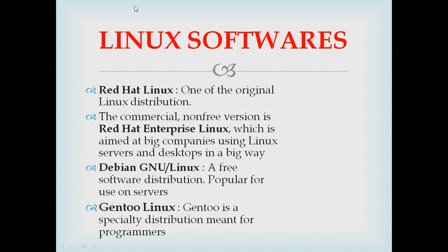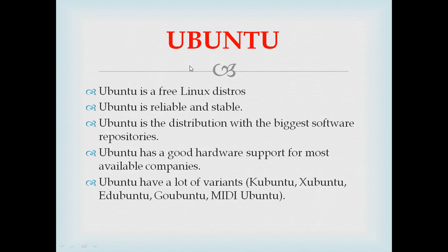There are various flavors and versions of Linux. Red Hat Linux is one of the original Linux distributions. Red Hat Enterprise Linux is the commercial non-free version aimed at big companies using Linux servers and desktops. Debian GNU/Linux is a free software distribution popular for use on servers. Gentoo Linux is a specialty distribution meant for programmers. Ubuntu is a free, reliable, and stable Linux distribution with the biggest software repositories, good hardware support, and variants like Xubuntu, Edubuntu, Gobuntu, and MIDI Ubuntu.